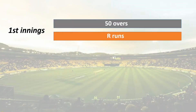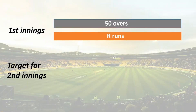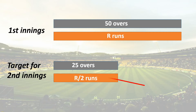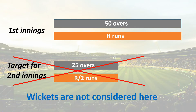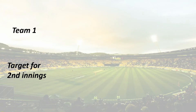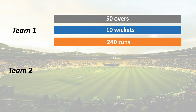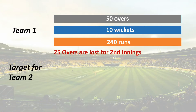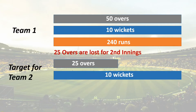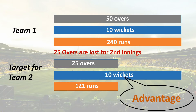When the match is interrupted and overs are lost, reducing the target is not as simple as reducing the runs proportionally with overs lost without considering the number of wickets lost or available. For example, if team 1 gets all 50 overs and 10 wickets and scores 240 runs, but team 2 gets only 25 overs with all 10 wickets and the target is set proportionally to 120, then team 2 has an advantage since it can bat aggressively in fewer overs with the same number of wickets.